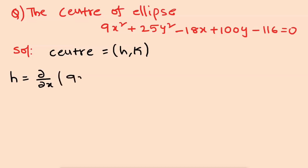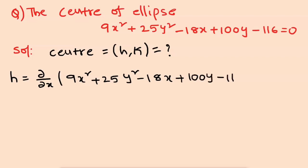We set partial differentiation with respect to x equal to zero. For the equation 9x squared plus 25y squared minus 18x plus 100y minus 116, treating y as constant: the derivative of x squared is 2x, so 9 times 2x is 18x. The term 18x gives 18, and 100y is zero since y is constant. Setting equal to zero: 18x minus 18 equals 0.